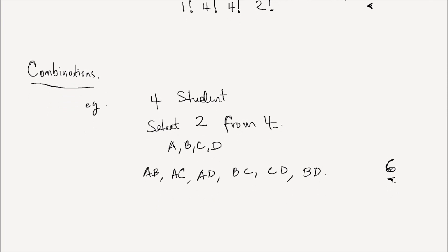What you notice here is that selecting A first followed by B is the same as selecting B first followed by A. This was not the case for permutations. In permutations, person A coming in first followed by person B coming in second is a different ordering from person B coming in first and person A coming in second. But in combinations, order does not matter.